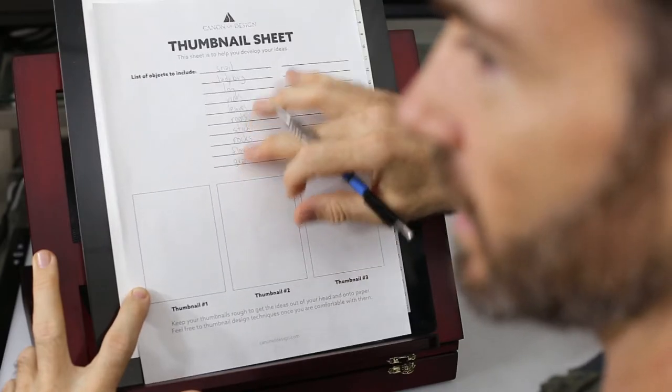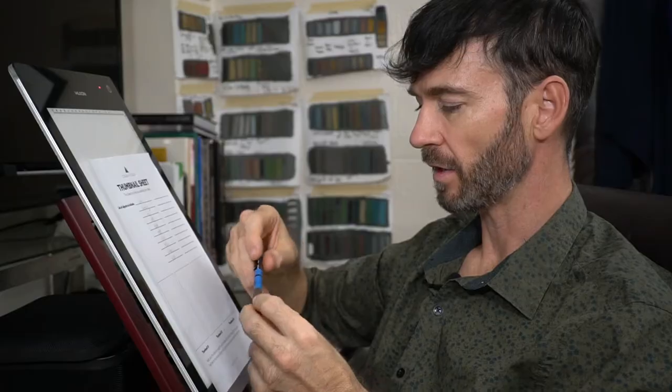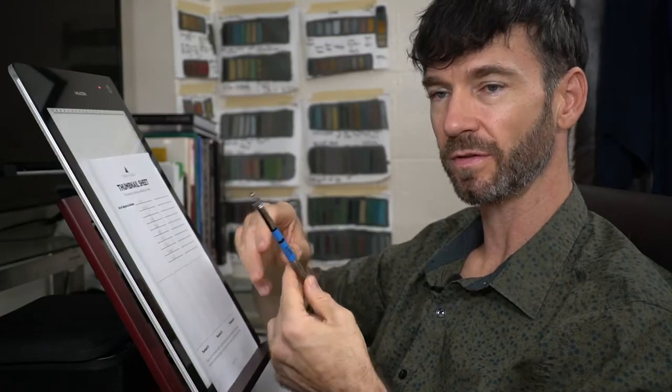The main subject is the snail and the story we can create within the composition is the interaction between the snail and the ladybug, and then they're in their own environment. I'm using the HB mechanical pencil for this, but you can use any pencil you like.